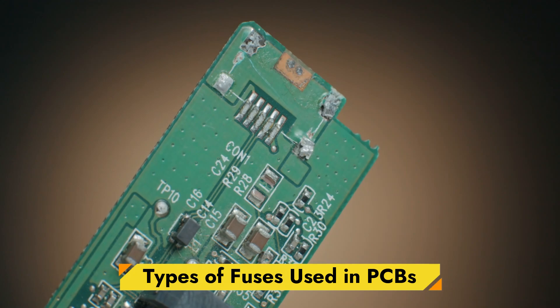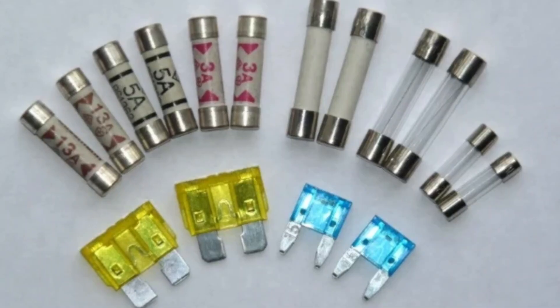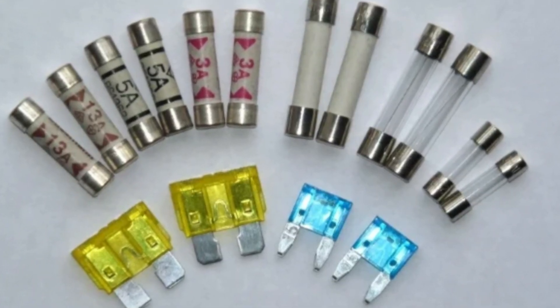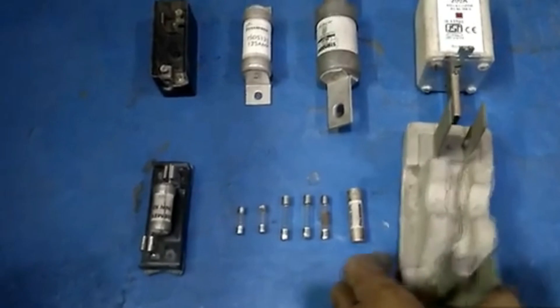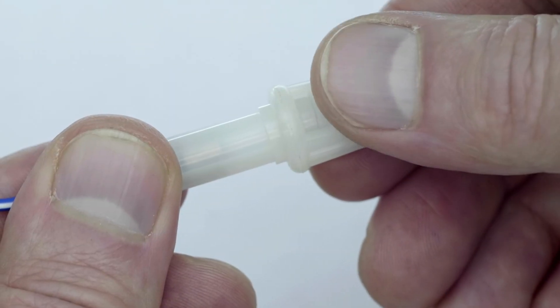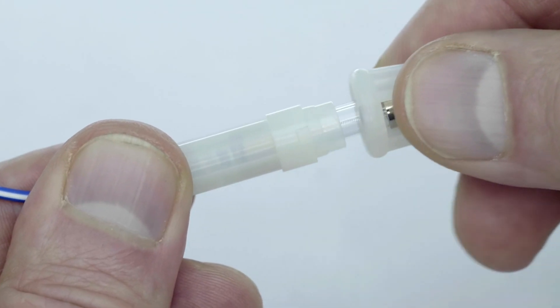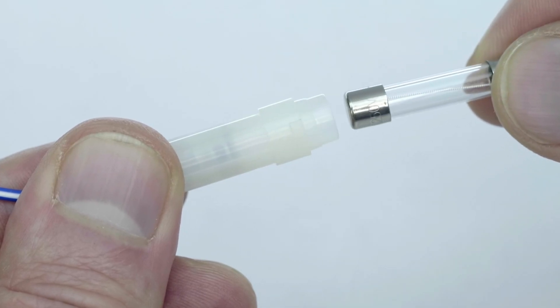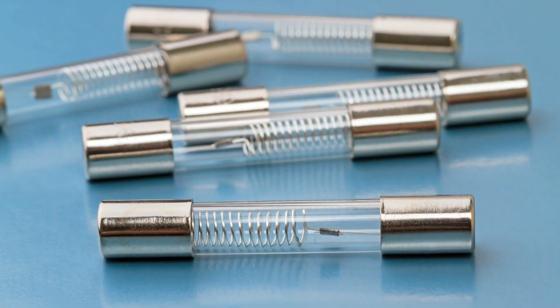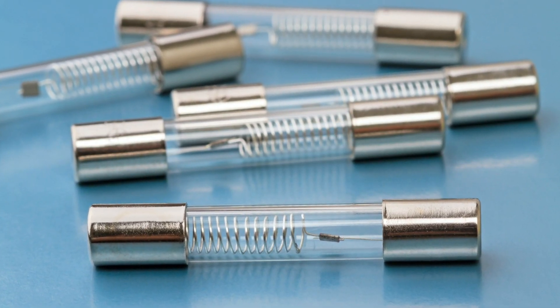Types of Fuses Used in PCBs. There are various types of fuses that can be used in PCBs, each suited to different applications and environments. Some common types include glass tube fuses, one of the oldest types of fuses used in electronics. They consist of a glass tube with metal end caps, and the fuse element is enclosed within the tube.